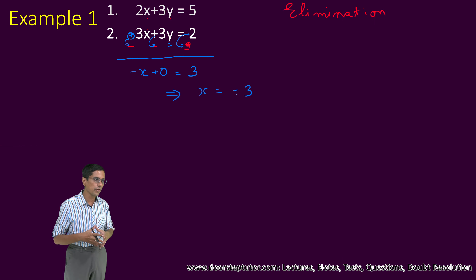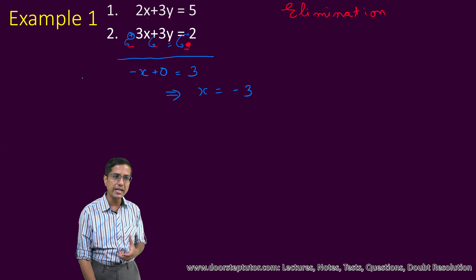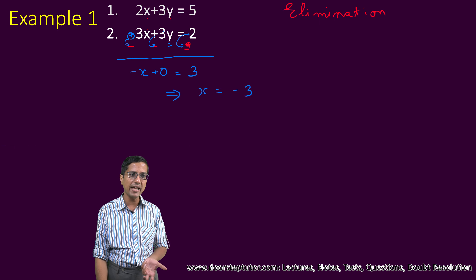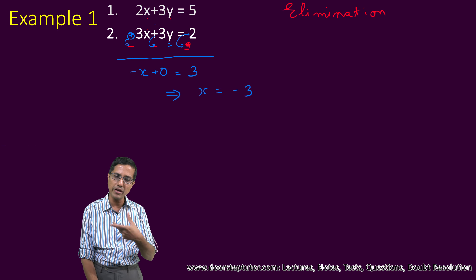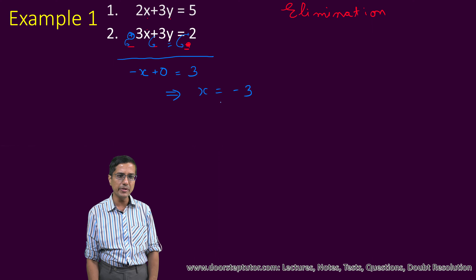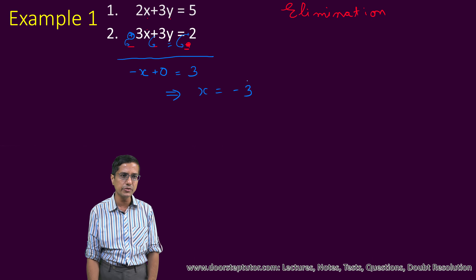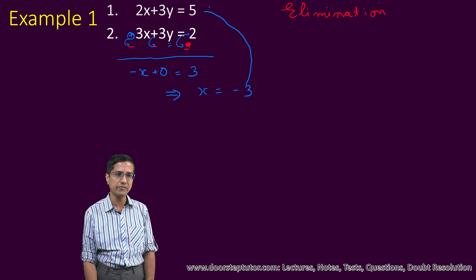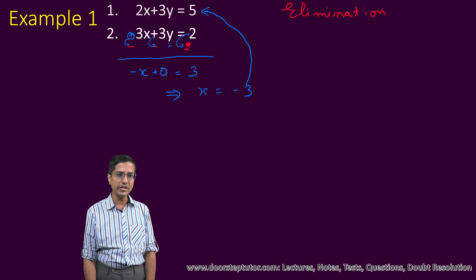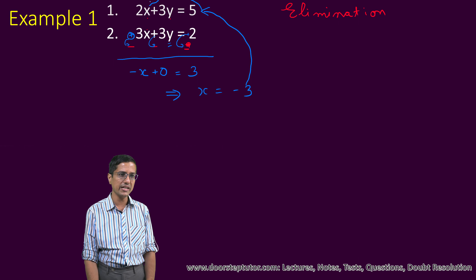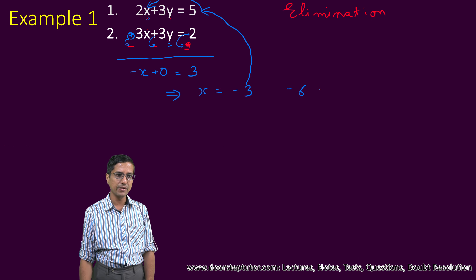Now there are two methods of going about solving for y. We can eliminate x and then solve for y — that is one method. The second method, which is our preferred method, is to just substitute x equal to minus 3 in the first equation. So substituting x as minus 3, this becomes minus 6 plus 3y is equal to 5. Therefore 3y is equal to 11, or y is equal to 11 by 3.